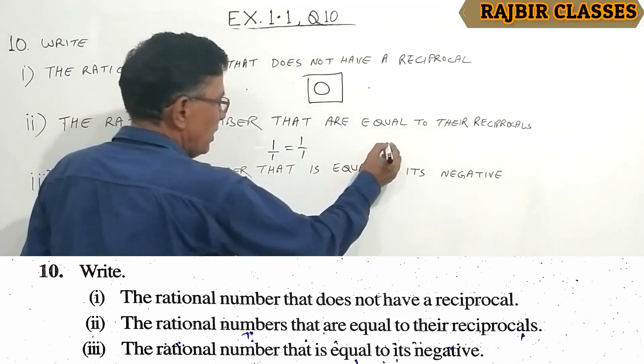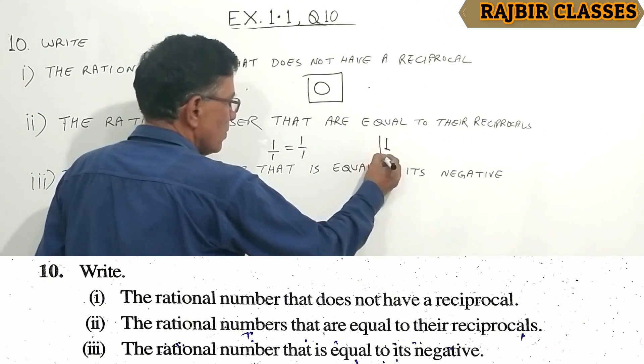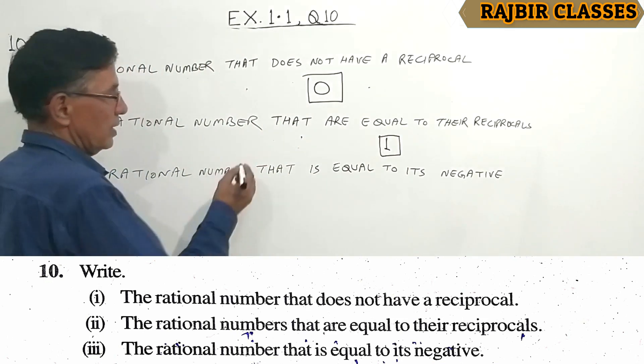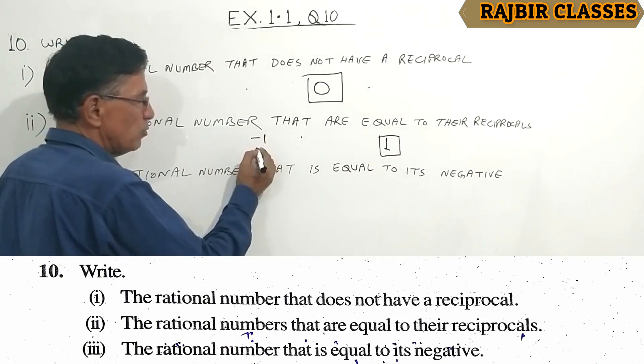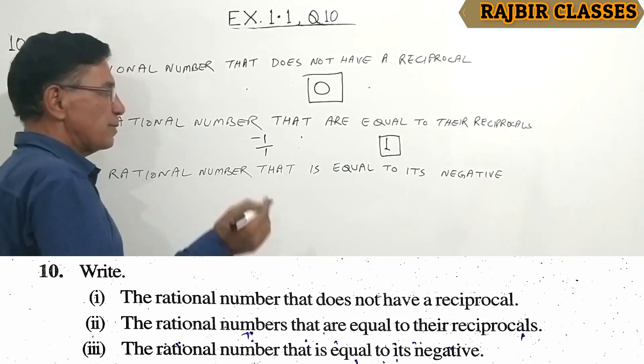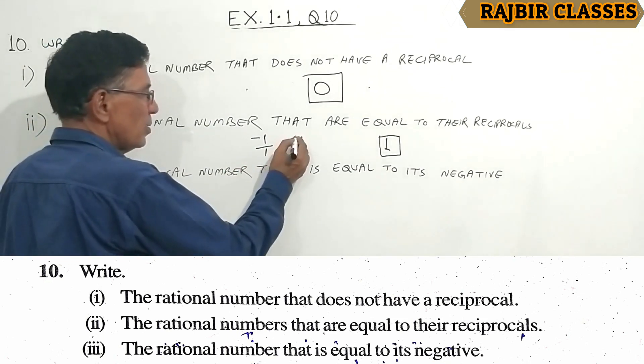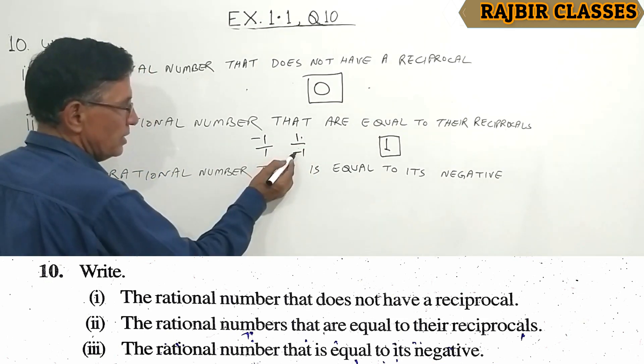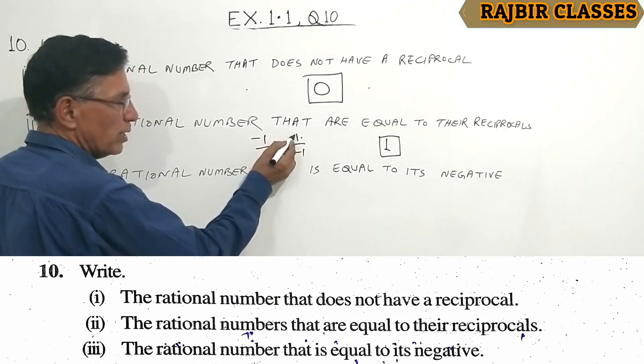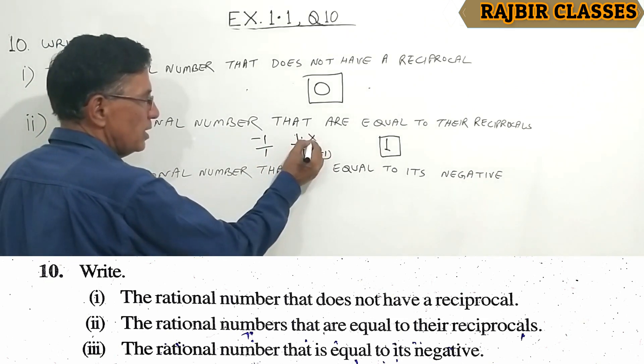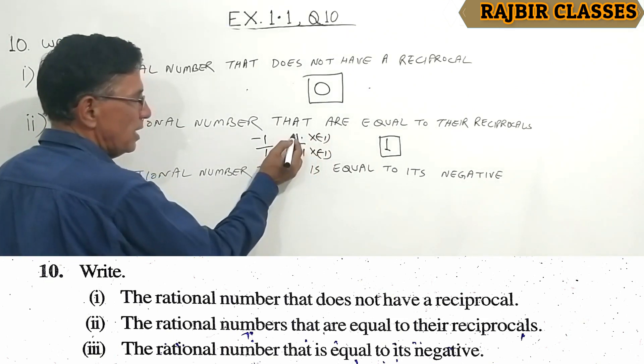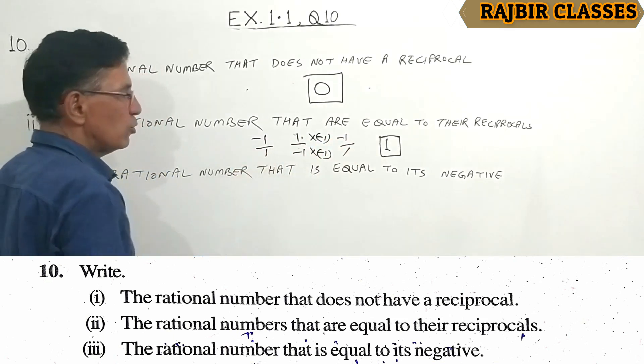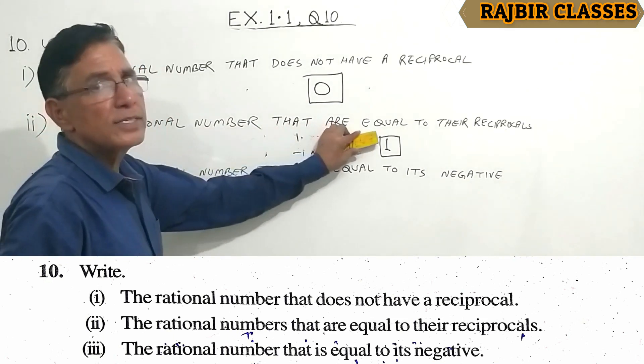The other one is minus 1. Minus 1 is minus 1 by 1. Its reciprocal is 1 by minus 1, which equals minus 1 by 1, which is minus 1. So the answers are 1 and minus 1.